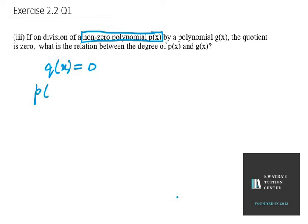We know that P(x) is the dividend, the divisor is G(x), and we have remainder as R(x).